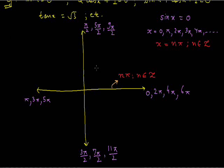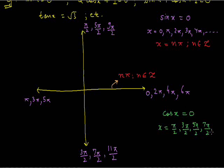Now let's talk about cos x equals to 0. We know that cos x equals 0 whenever x equals pi by 2, or 3 pi by 2, or 5 pi by 2, or 7 pi by 2, and so on, which can be obtained using suitable reduction formulas. Now again, we want to write these solutions in just one line. These values appear on the vertical line: pi by 2, 3 pi by 2, 5 pi by 2, 7 pi by 2, 9 pi by 2, and so on.